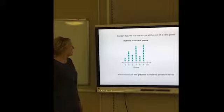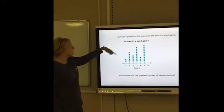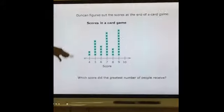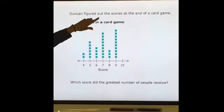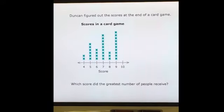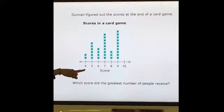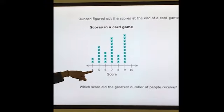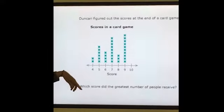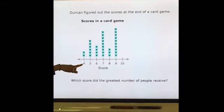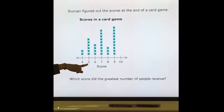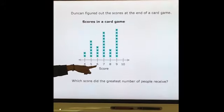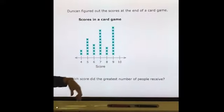Let's look at another line plot. Again, we want to read the information. This says scores in a card game. It says, Duncan figured out the scores at the end of a card game. So here's the scores. Now notice this time the line plot does not start with a 0. It starts with a 4. So this many people scored 4. This many people scored 5. This many people scored 6. You can look at the data there.